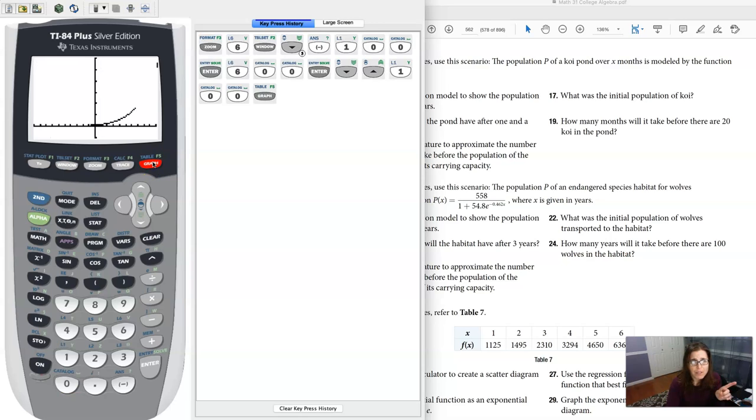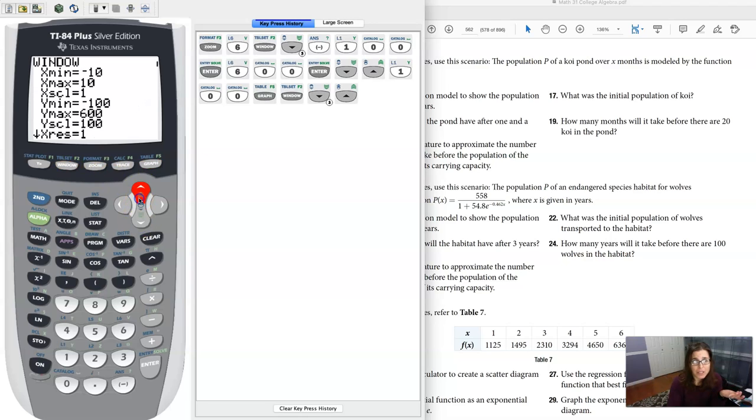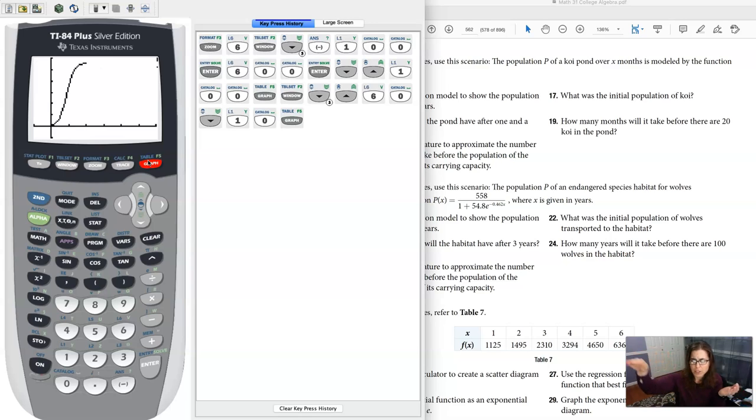Then there we see our logistic growth model, and I see the horizontal line, y equals 279 coming through. If you wanted to see more of it, you could extend the x max. Maybe I go to 60 instead of just 10, and then you'll actually see a real good logistic curve coming out. There you can see it hitting that carrying capacity.